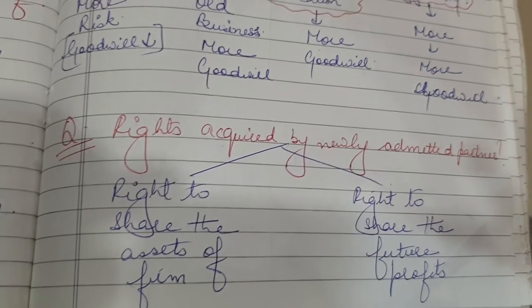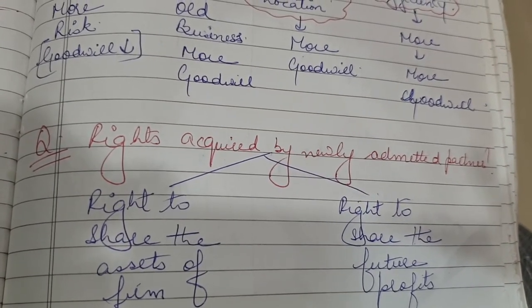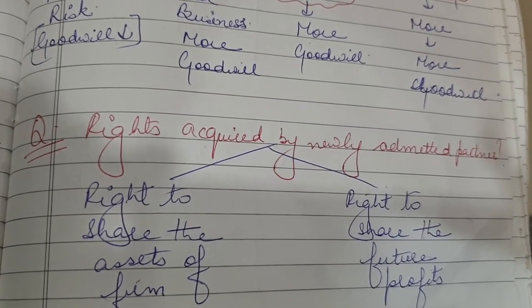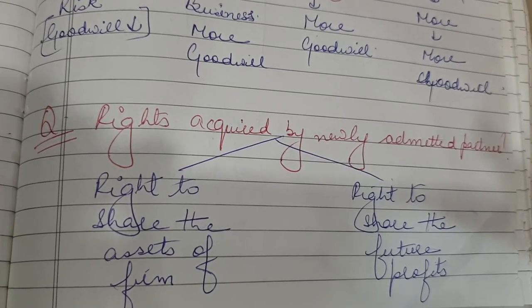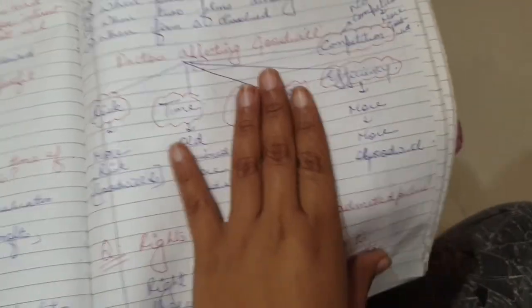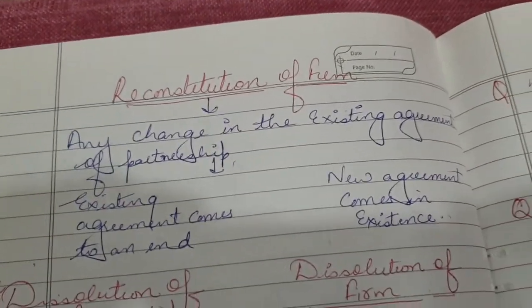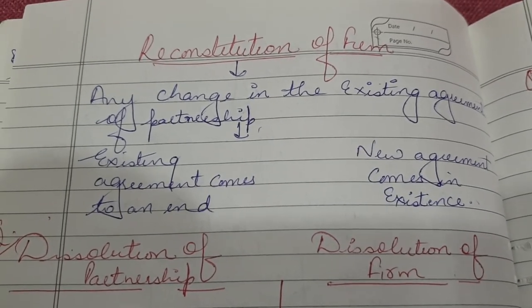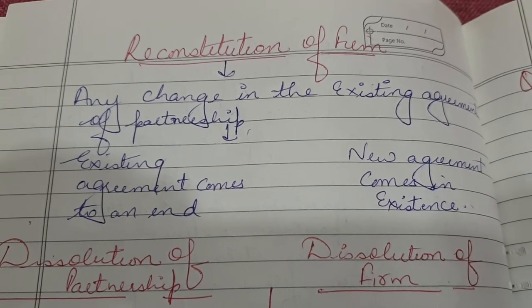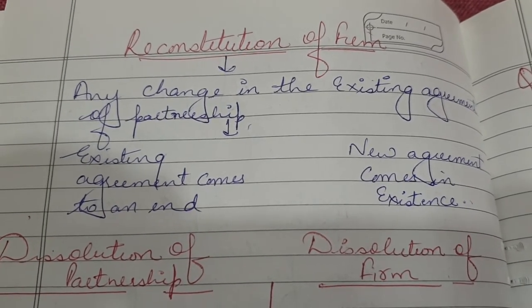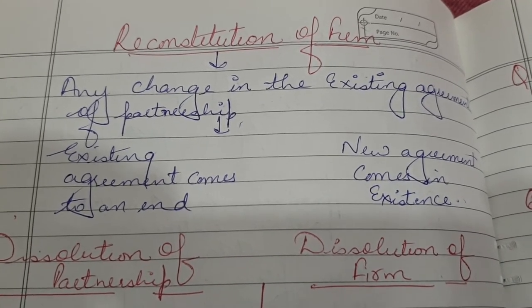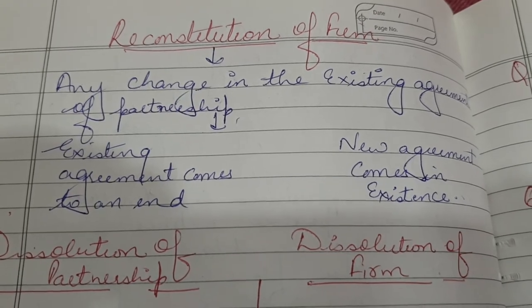What are the rights acquired by a newly admitted partner? First is the right to share the assets of the firm, and second is the right to share the future profits. What is the meaning of re-constitution of a firm? It means any change in the existing agreement of the partnership — any change in the agreement is called re-constitution, where the existing agreement ends and a new agreement comes into existence.